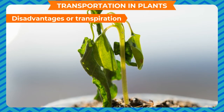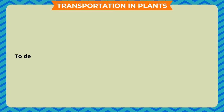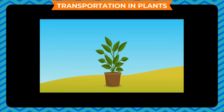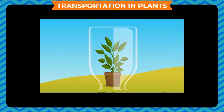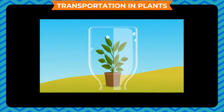Plants start wilting if water loss is more than absorption. To demonstrate transpiration in plants, take a well-watered potted plant having broad leaves and cover the pot with a bell jar. Leave the setup in sunlight for half an hour. You can see tiny drops of water on the inner surface of the bell jar. These drops have appeared by the condensation of water vapor that has evaporated from the leaves.